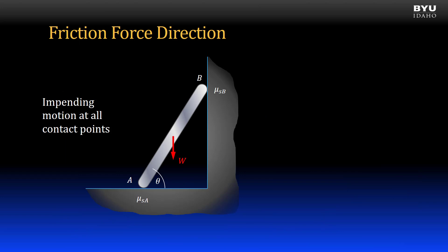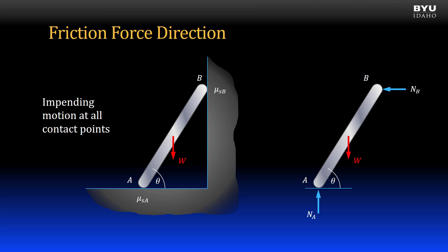Let's consider a different type of friction problem. Suppose that we have a rod supported on a horizontal surface at one end and a vertical surface at the other. If there is impending motion at one of the contact points then there is also impending motion at the other contact point. Here is a free body diagram showing the self-weight and the normal forces at both supports. We will have friction forces at both contact points.